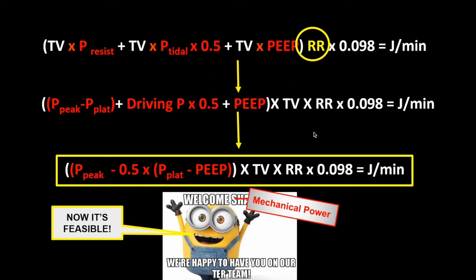Using this formula: tidal volume times P-resist, plus tidal volume times P-tidal times 0.5, plus tidal volume times PEEP — all multiplied by respiratory rate, because we monitor this over time. It is not just a single breath. The factors 0.5 and 0.098 are derived from the equations. Reducing it further, it comes down to: (PEEP + 0.5 × (P-plat − PEEP)) × tidal volume × respiratory rate × 0.098.